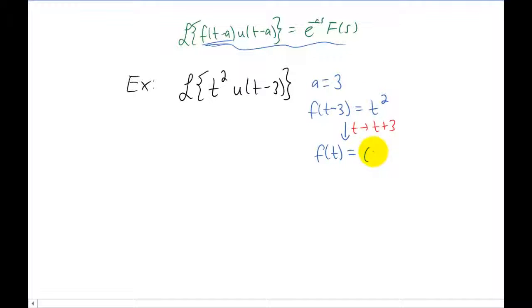On the right, t was squared. We're replacing t with a t plus three. So that's what you have now. Now the whole reason we wanted little f of t was so that we could get capital F of s. And the way that we get capital F of s is we take a Laplace transform. Of course the only way to actually do this Laplace transform is to foil this thing out. And you can take the Laplace transform of each individual piece.